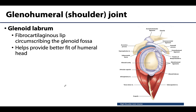Lastly, the glenoid labrum circumscribes the glenoid fossa and helps provide a better fit for the humeral head, slightly deepening the glenoid fossa to allow for improved articulation with the humeral head. Labra are only associated with ball and socket joints, and the shoulder joint is one of the two major ball and socket joints in the body, the hip joint being the other.